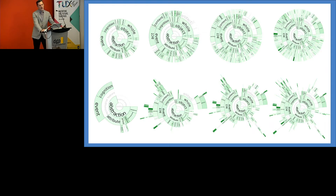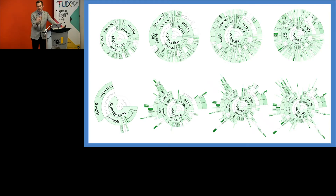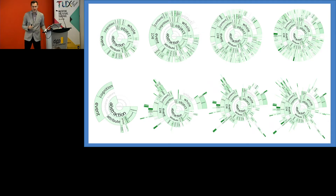I say this with a caution from an information visualization theory point of view — we've now got an algorithm deciding what it is that we're going to see. That's a positive advantage in this particular case, but we also want to make sure people are aware that information has been elided from this view. We're working on different kinds of hints to show where information has been removed. We've applied this algorithm to other types of visualizations, such as tree maps as well.